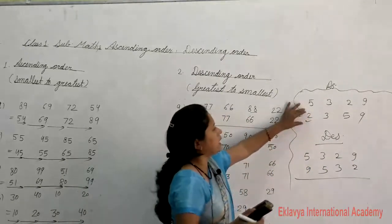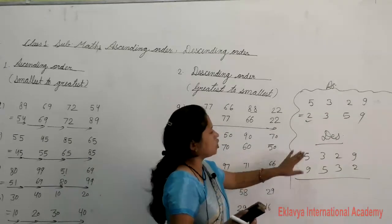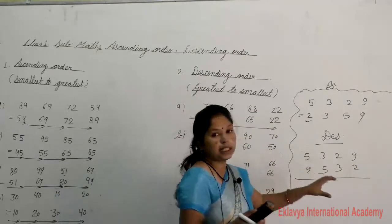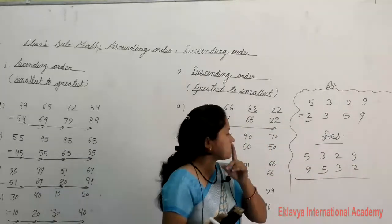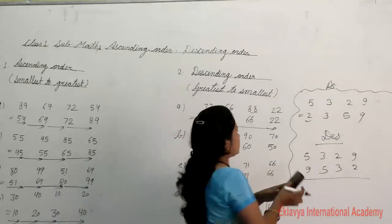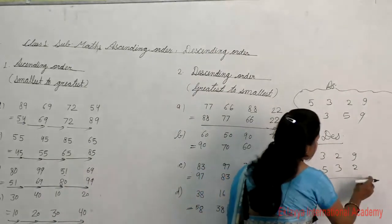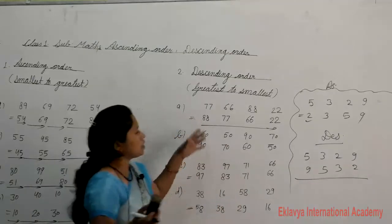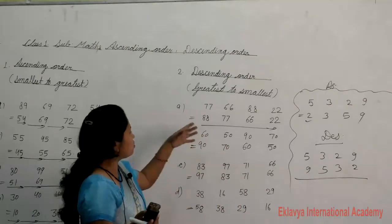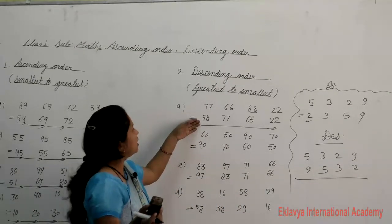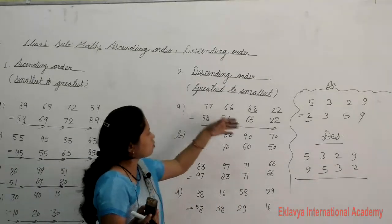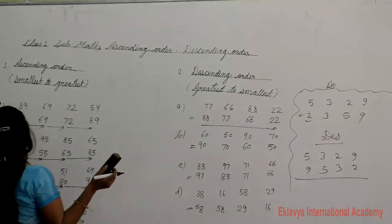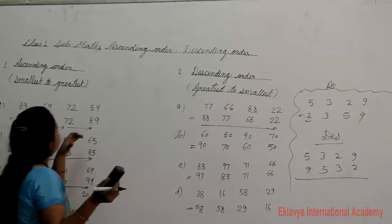To cross-check: ascending order is written in front, descending order is written in reverse. Descending is greatest to smallest, and ascending is smallest to greatest.